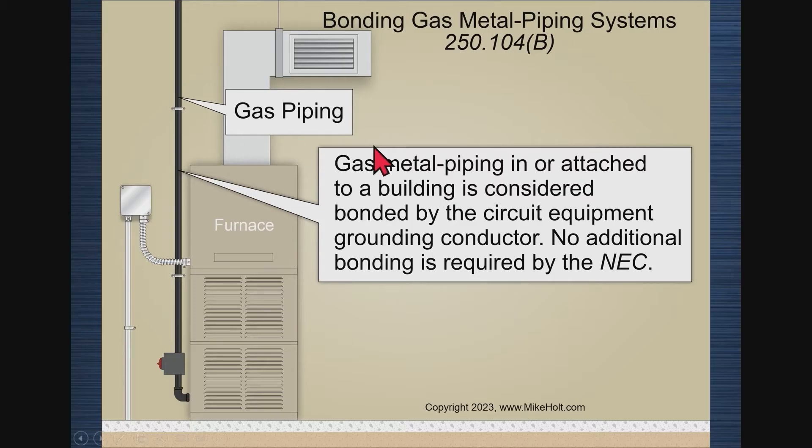The code says that you have to bond other piping systems. If it's not a metal water piping system — like water piping or sprinkler — then other piping systems also have to be bonded.